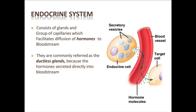The word 'endocrine' is a Greek word made up of two parts: 'endo' and 'crinus.' Endo means 'within' and crinus means 'to secrete.' So the word endocrine is derived from Greek and means to secrete within.